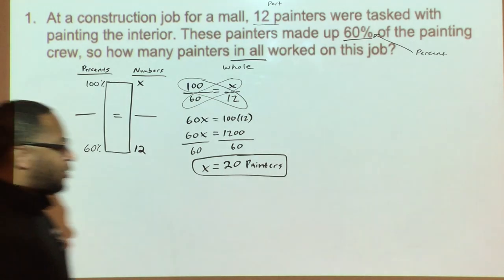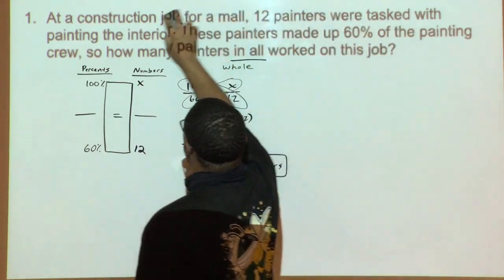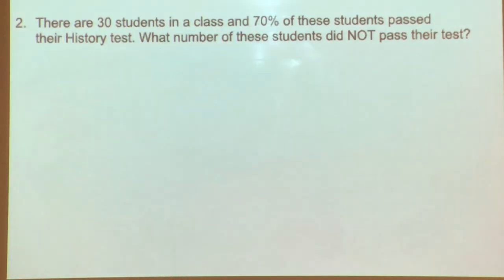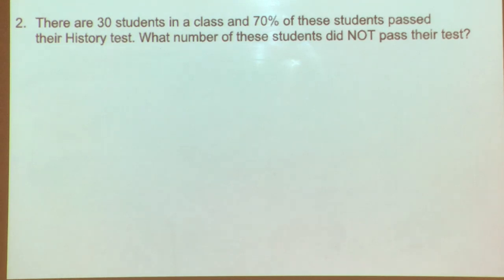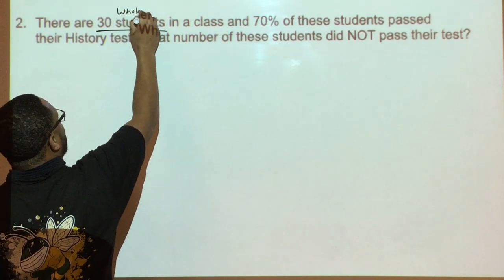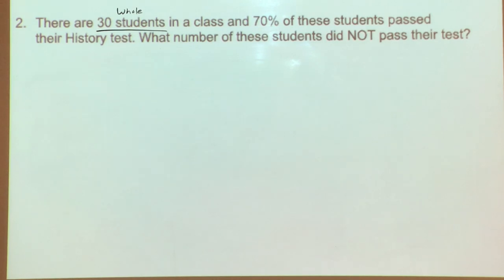Feel free to pause and replay this video as needed. Moving on to our second example: there are 30 students in a class and 70% of these students passed their history test. What number of these students did not pass their test? We need to determine what the numbers represent. The 30 represents the total number of students, so that is the whole.